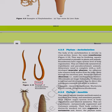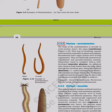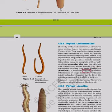Phylum Aschelminthes: The body is circular in cross-section, hence called roundworms. They may be free-living aquatic and terrestrial or parasitic in plants and animals. They have organ system level of organization, are bilaterally symmetrical, triploblastic, and pseudocoelomate. The alimentary canal is complete with a well-developed muscular pharynx. An excretory tube removes body wastes through the excretory pore. Sexes are separate (dioecious); females are often longer than males. Fertilization is internal; development may be direct or indirect.